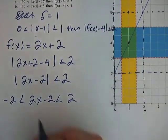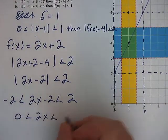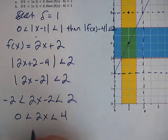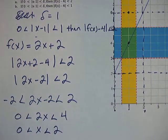And then we add 2 to both sides. That would give us 0 is less than 2x is less than 4. And then divide each side, all three sides, by 2. Still a 0, x, and 2.